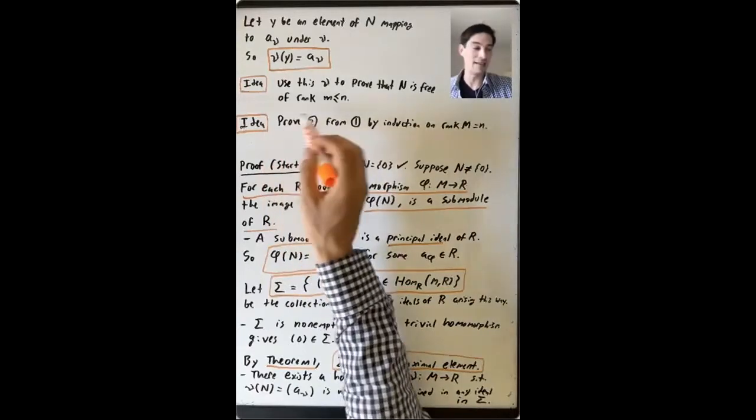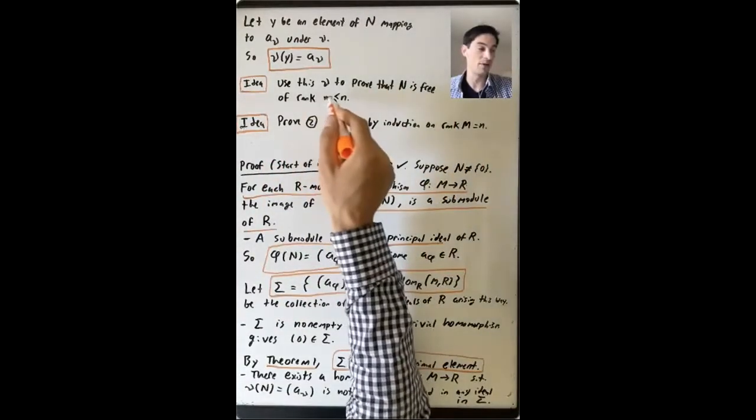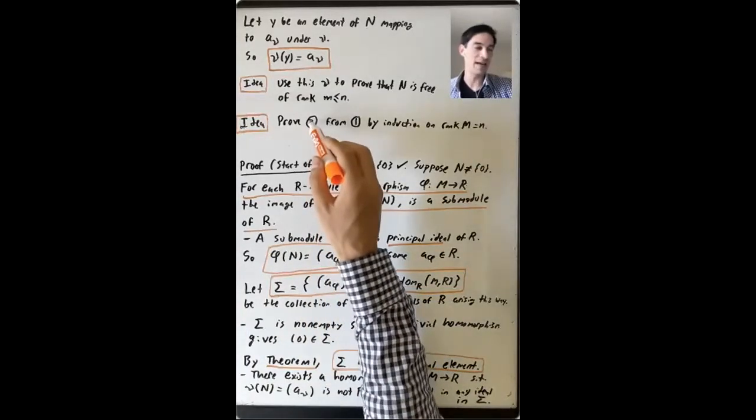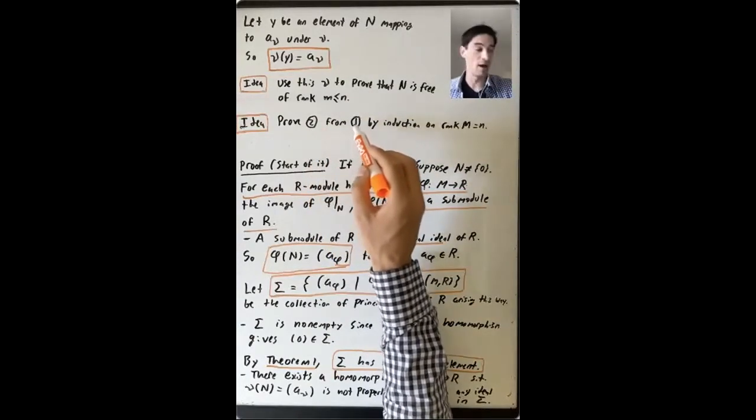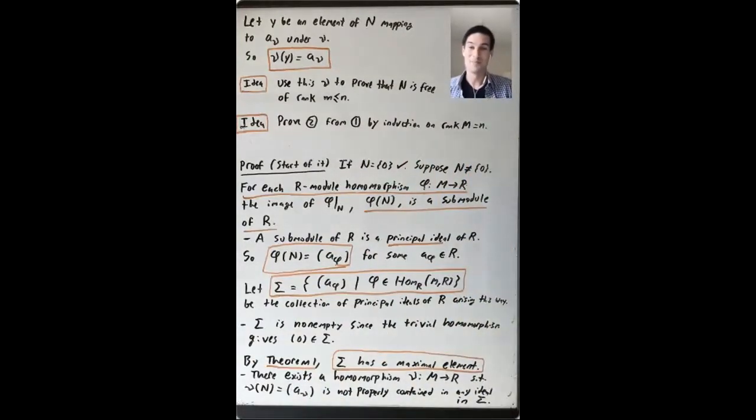The second big idea is that we have to prove that N is a free R module of rank M, but we also have to prove that there are these good choices of bases, a nice basis for M and a nice basis for N, given by these elements that satisfy these divisibility relations. So we're going to prove that existence of a good basis part, this statement number two, from statement number one, by induction on the rank of M.